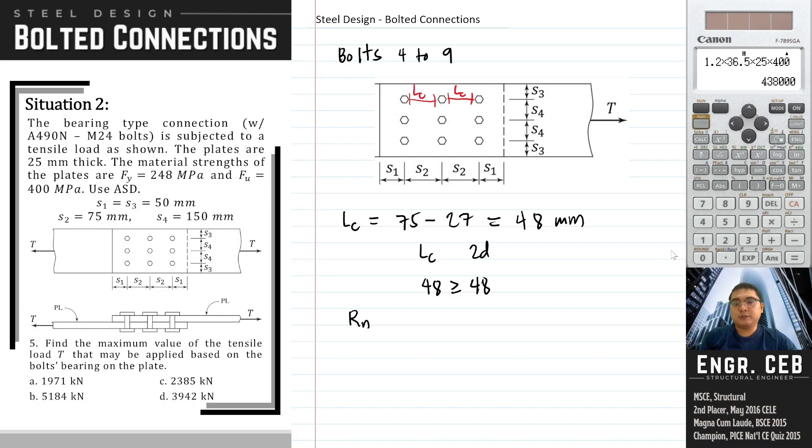Let's use the formula for bearing deformation: 2.4 times Fu times t. We have 2.4 times 24 times thickness times 400. Therefore, the nominal strength for bolts 4 to 9 is 576 kN.